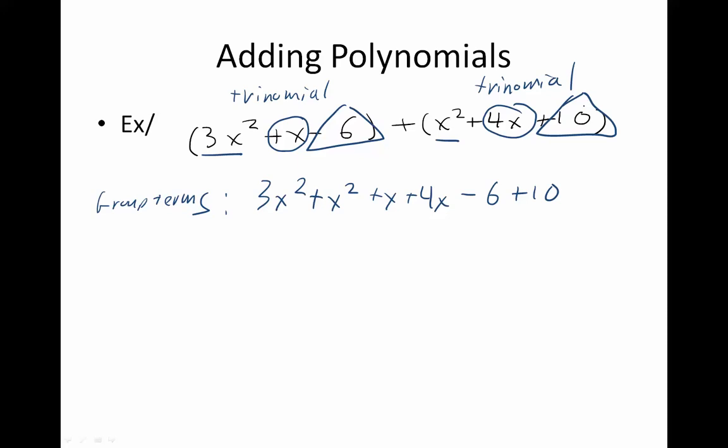Those shapes came out better. And now, I just combine the things that are the same. 3x² + x² is 4x². x + 4x is +5x. -6 + 10 is +4. And there is my solution.